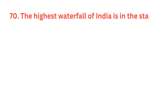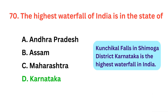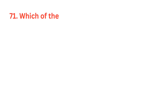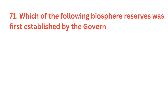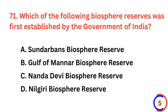The highest waterfall of India is in the state of? The correct answer is option D, Karnataka. Which of the following biosphere reserves was first established by the government of India? The correct answer is option D, Nilgiri Biosphere Reserve.